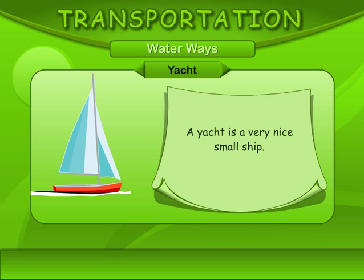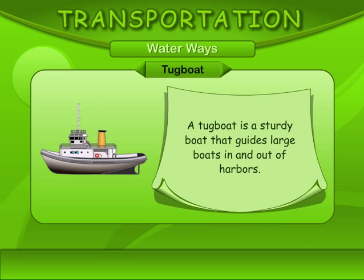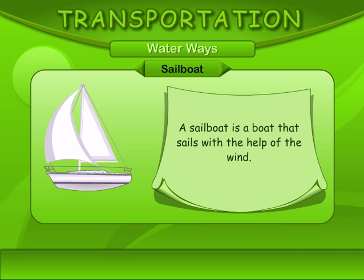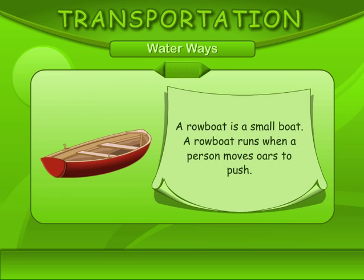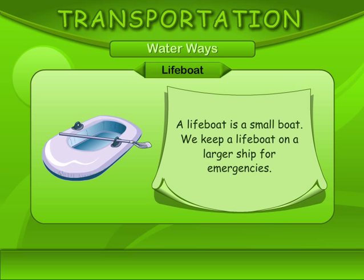A yacht is a very nice small ship. A tugboat is a sturdy boat that guides large boats in and out of harbours. A sailboat is a boat that sails with the help of the wind. A rowboat is a small boat that runs when a person moves oars to push. A lifeboat is a small boat we keep on a larger ship for emergencies.